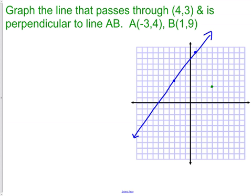The first thing we need to do is find the slope of line AB. We do that by nine minus four over one minus negative three. This gives us a slope of five fourths.